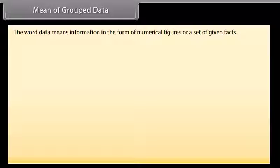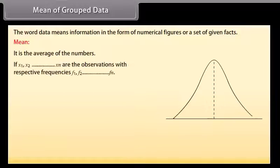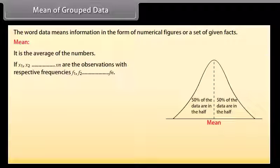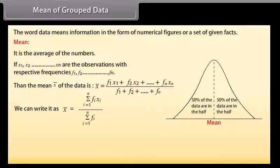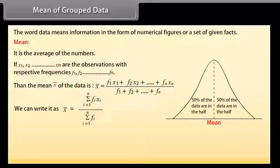Mean of grouped data. The word 'data' means information in the form of numerical figures, or a set of given facts. Mean is the average of the numbers. If X1, X2, and so on till Xn are the observations with respective frequencies F1, F2, and so on till Fn, then the mean X-bar is equal to F1·X1 plus F2·X2 plus so on till Fn·Xn, divided by F1 plus F2 plus so on till Fn. We can write it as X-bar equals the summation from i equals 1 to N of Fi·Xi, divided by the summation from i equals 1 to N of Fi.